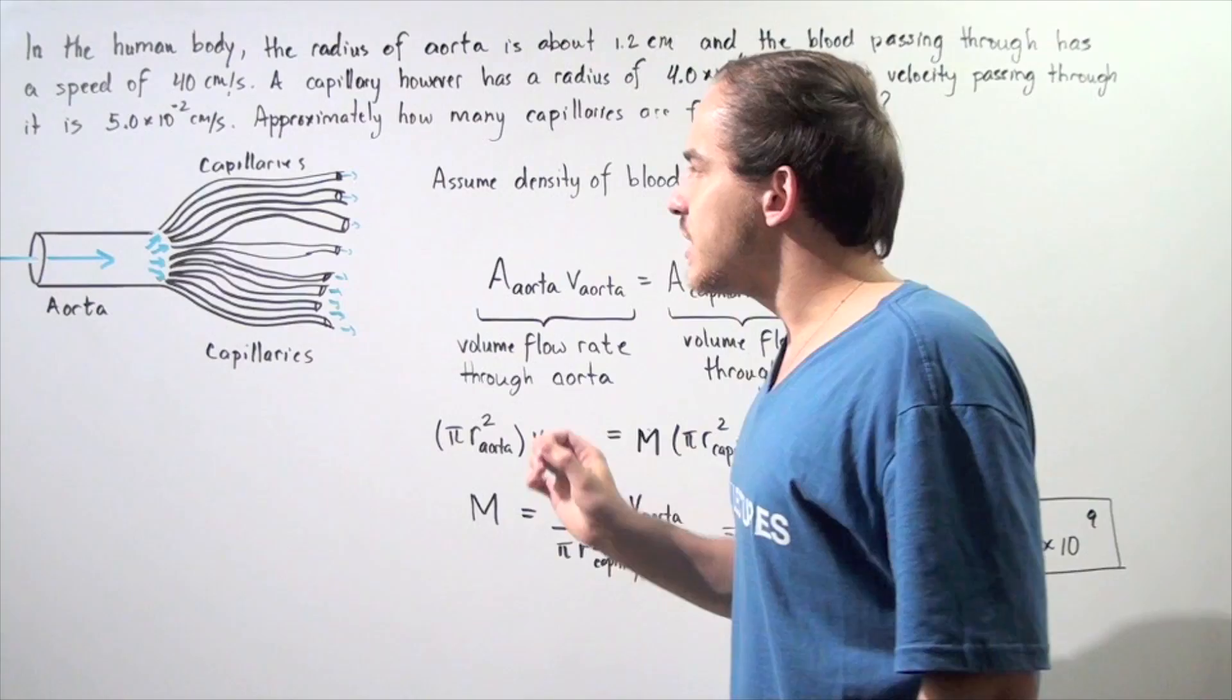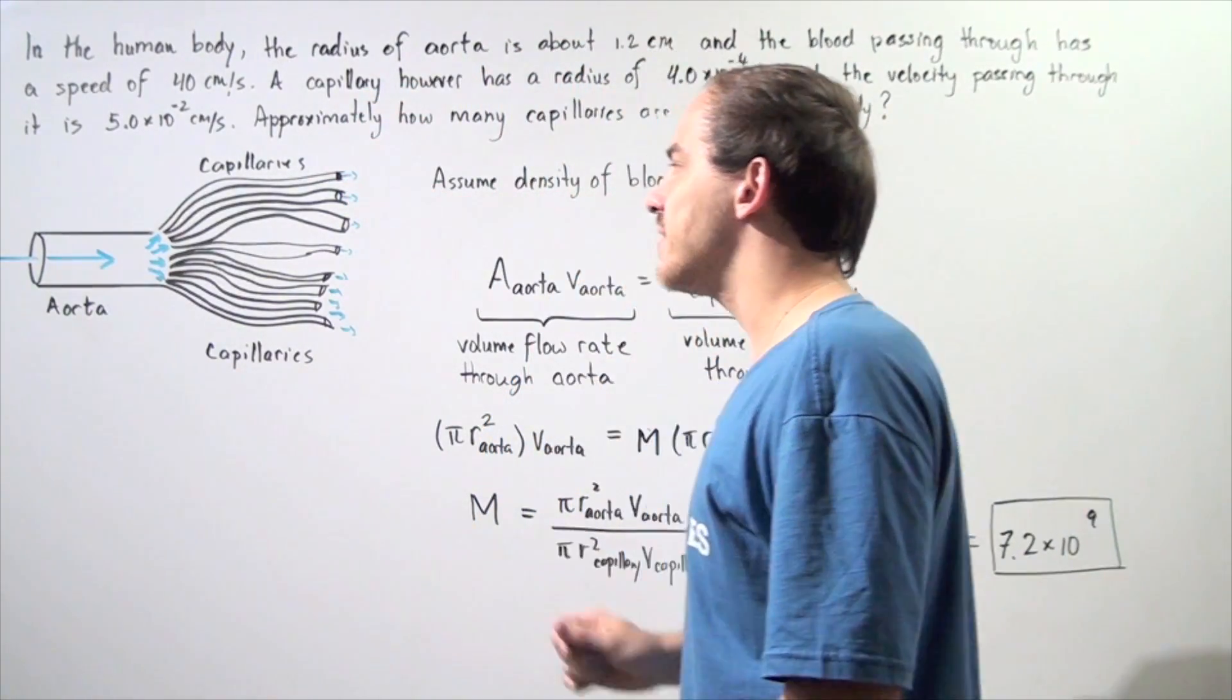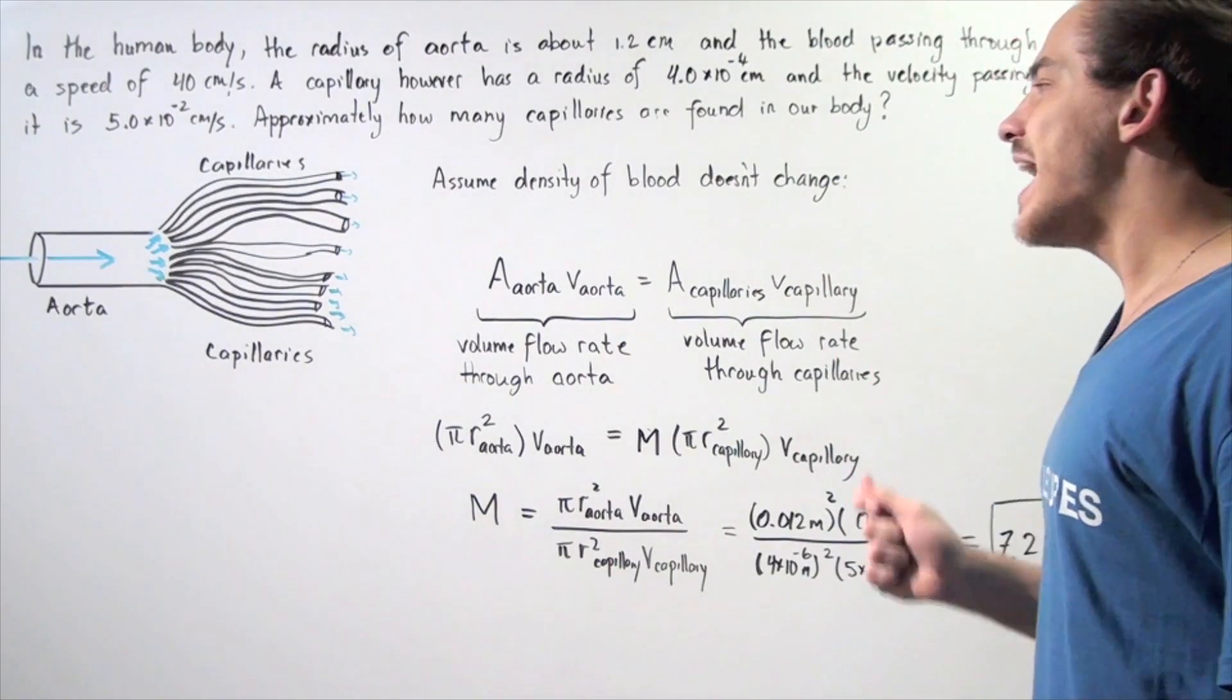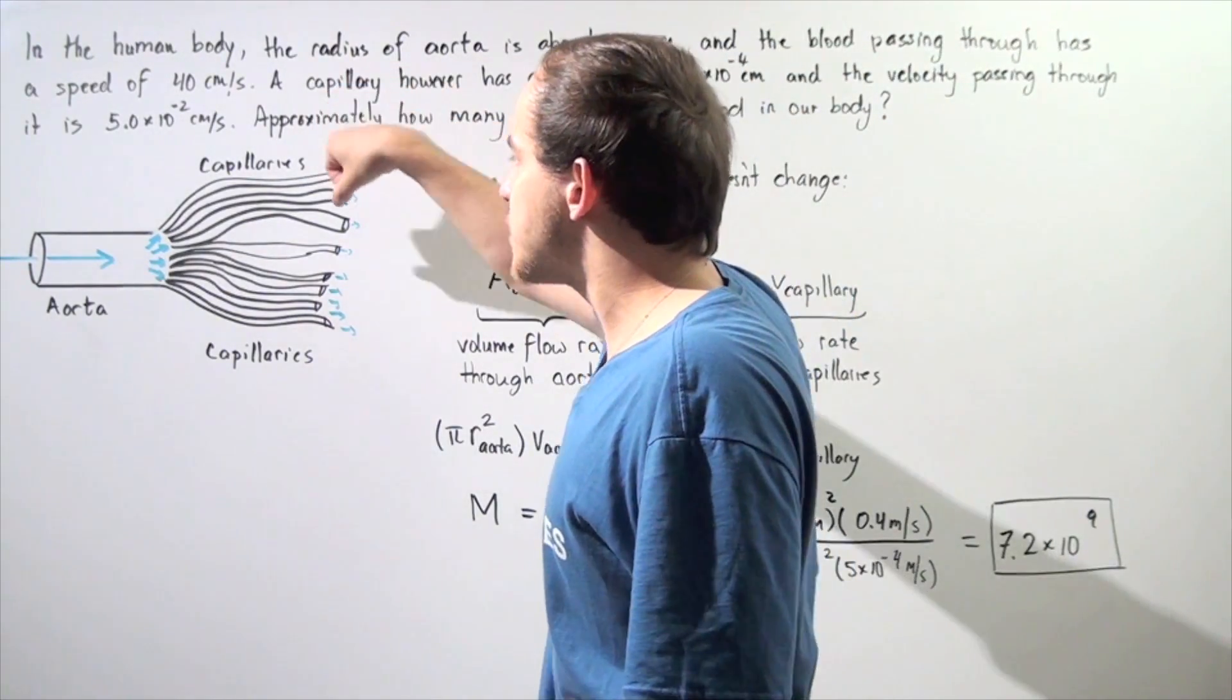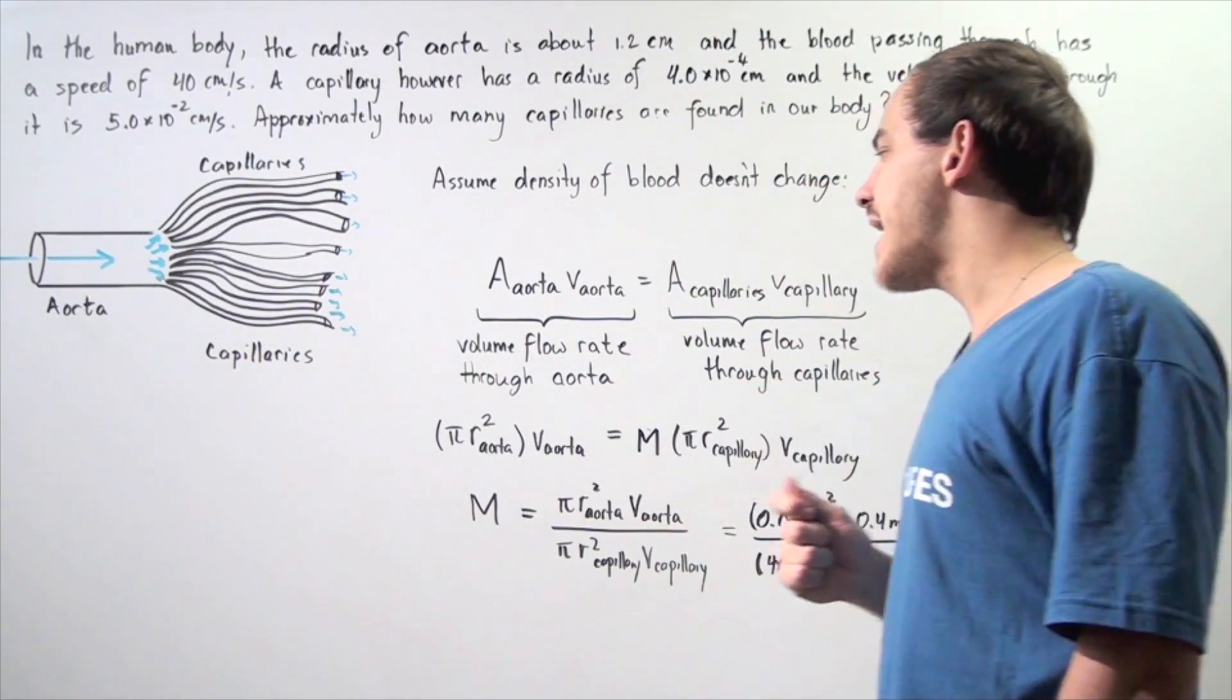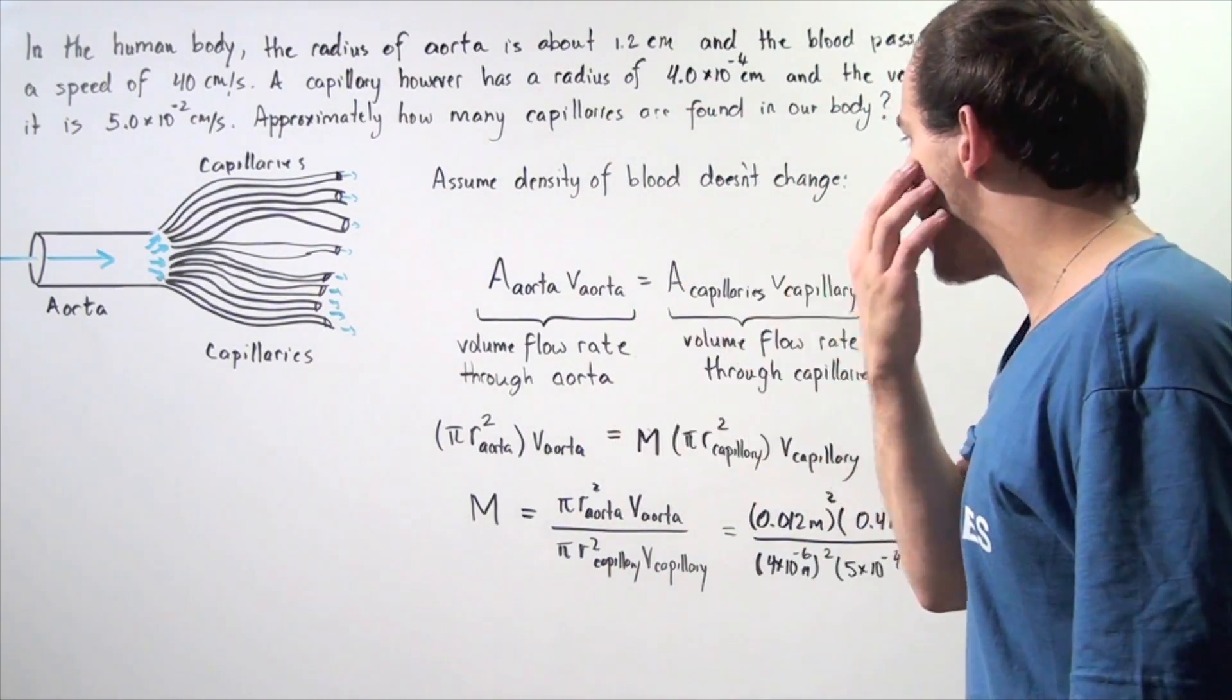We are assuming that the velocity of blood within every single capillary is exactly the same. And we are also assuming that the cross-sectional area of each capillary is also the same. Using those assumptions, let's begin our problem.